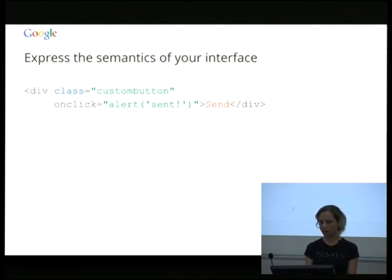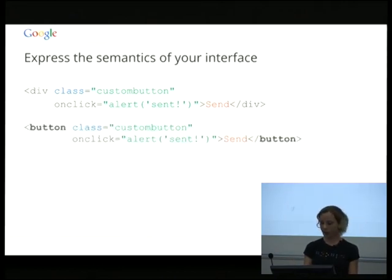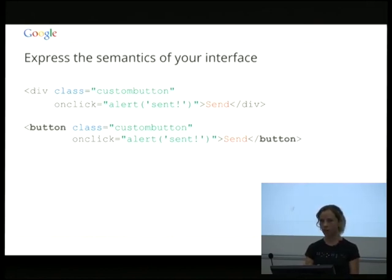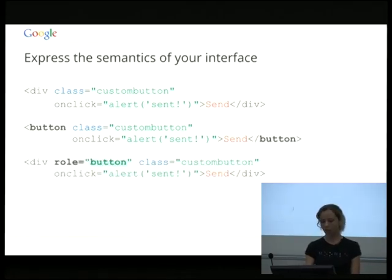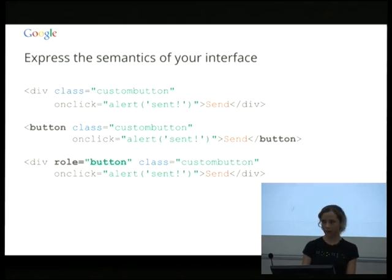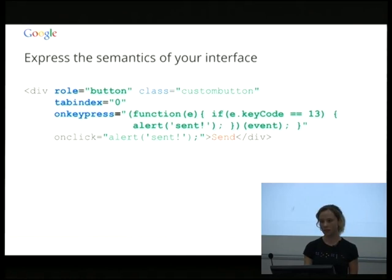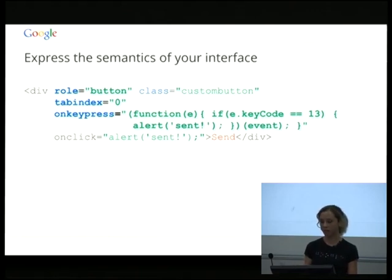ARIA stands for Accessible Rich Internet Applications — it's a suite of roles, states and properties expressed as HTML attributes. Here's an example of what we call div soup: an interface expressed entirely in terms of divs and spans with no semantic information whatsoever. We have something presumably styled as a button — it looks pretty, it's obvious to a sighted user, and it handles a click event. Ideally we just make that into a button element, and it'll handle keyboard events trivially, sound right to a screen reader, and we can still style it. If we can't use an HTML5 element, we can use the role attribute to tell a screen reader this is acting as a button.